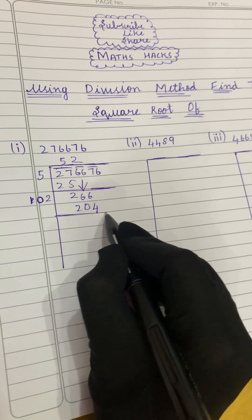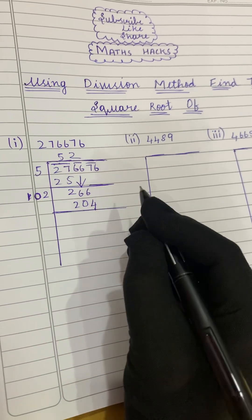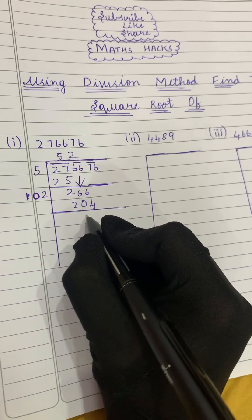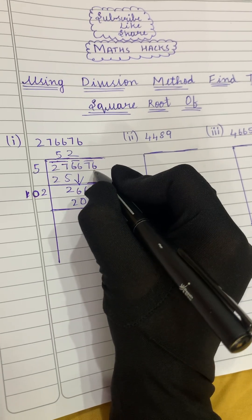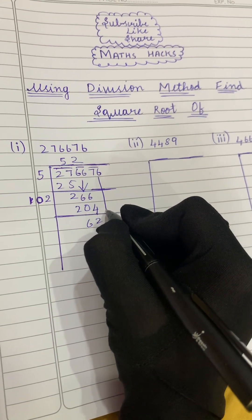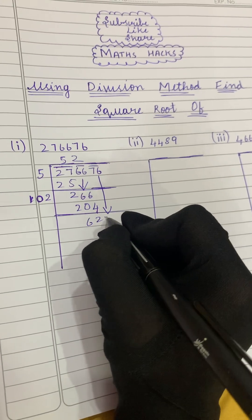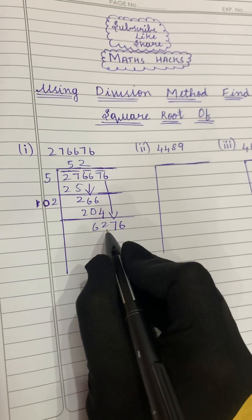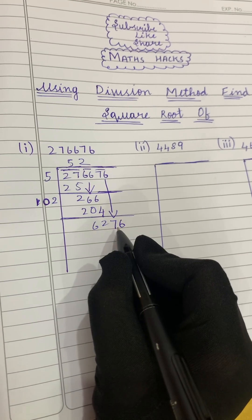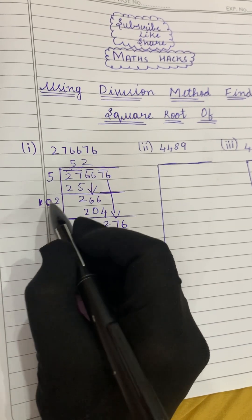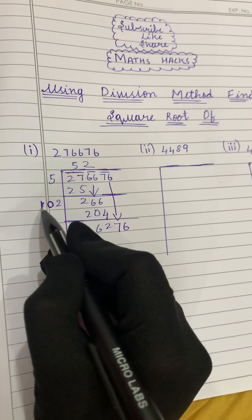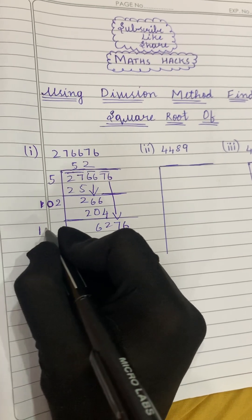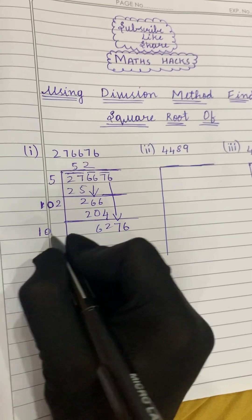We subtract: 266 minus 204 gives 62. Now let's bring the third pair down — the third pair is 76 — giving us 6276.